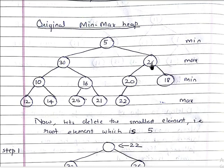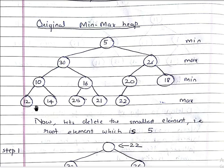Then we have 30 and 26 at max level, which are obviously bigger than the root element 5. Then again we have min level, where children of 30 are 10 and 16, which are smaller than their parent, and 20 and 18 are children of 26, which are also smaller than their parent. Again we have max level, where the children are bigger than their parent: 12 and 14 are bigger than 10, 25 and 21 are bigger than 16, and 22 is bigger than 20. So this is our original min-max heap.